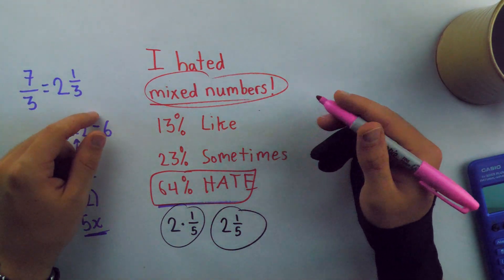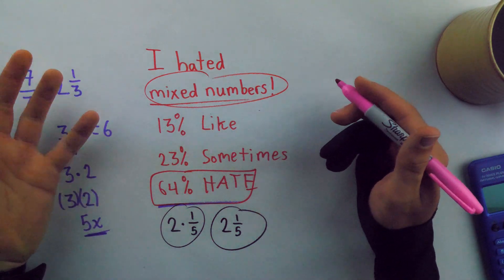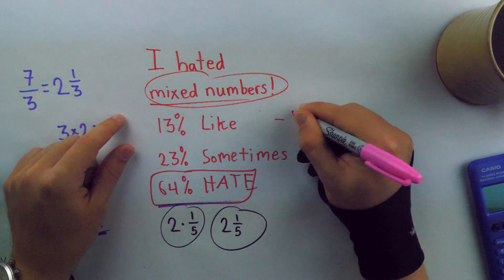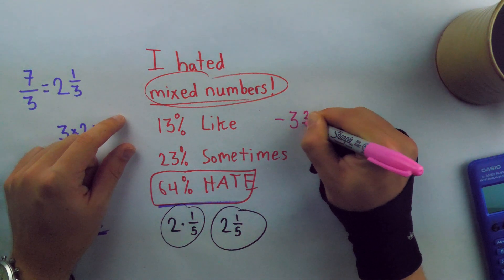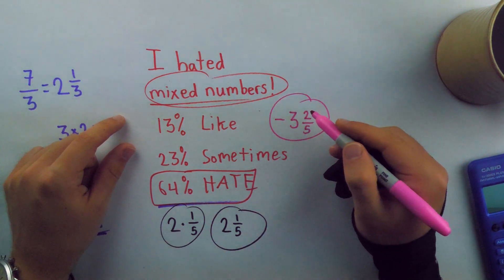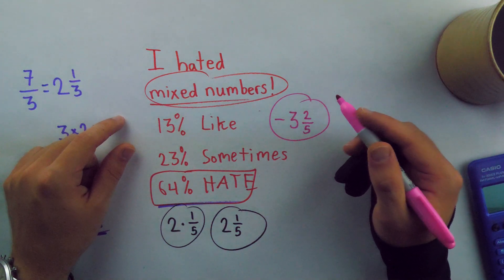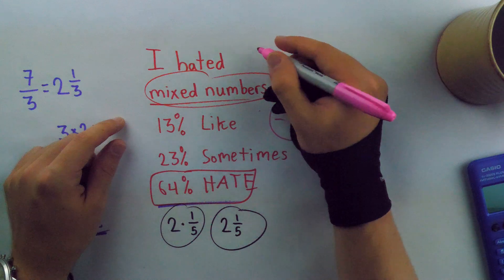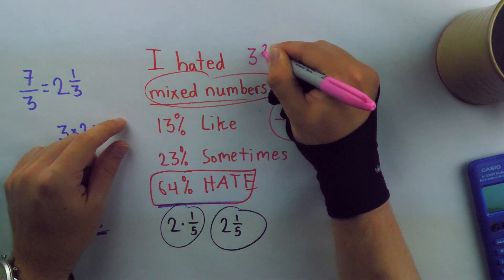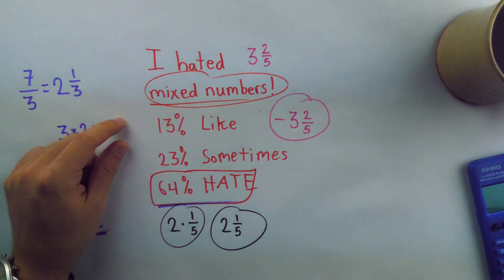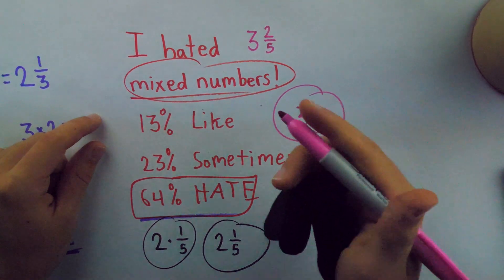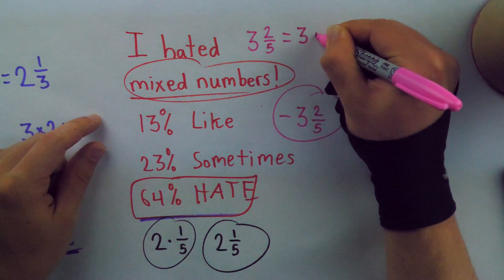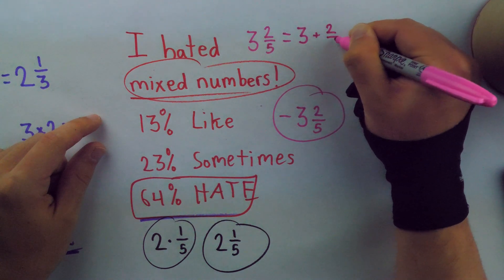Consider the mixed number three and two-fifths. What if I want to write that as a negative? What if it is negative and I need to write that? So I say, negative three and two-fifths. But what the heck does that mean? It doesn't really look clear. Let's think about this mixed number notation. If we just have positive three and two-fifths, what does this really mean? Well, it's basically shorthand for addition. This mixed number notation, three and two-fifths, is a shorthand for three plus two-fifths.